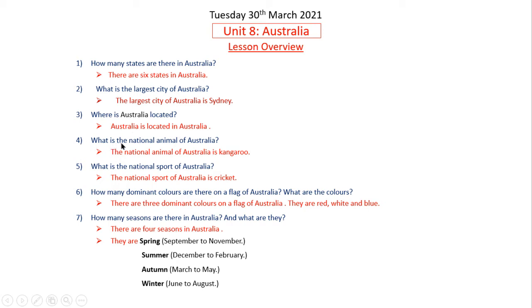Question 4: What is the national animal of Australia? The national animal of Australia is the kangaroo. Question 5: What is the national sport of Australia? The national sport of Australia is cricket.